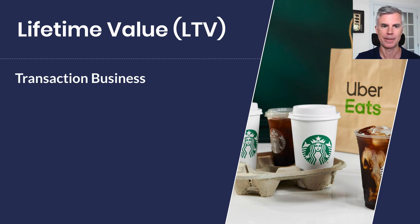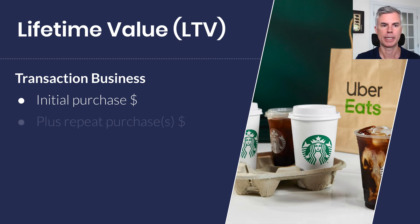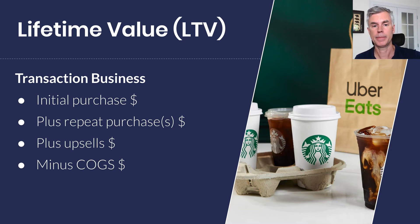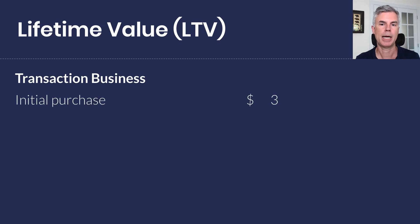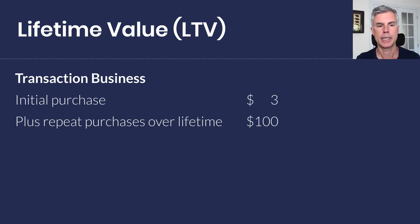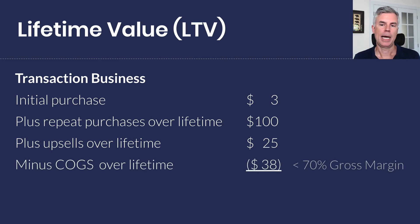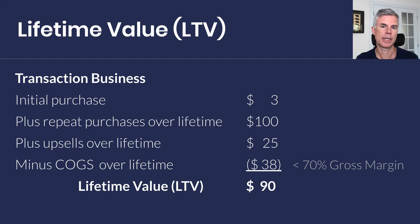Let's look at a transactional business example: the coffee shop. We have the initial purchase amount the first time you walk in, plus repeat purchases over your lifetime as a customer, plus any upsells like coffee beans or a coffee grinder, minus the cost of goods sold. For example: first coffee is $3, then another $100 in coffee over a year, plus beans. With the coffee shop's 70% gross margin, we subtract the COGS — which is 70% of $128 — giving a lifetime value of $90.